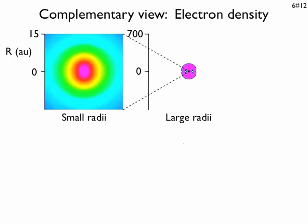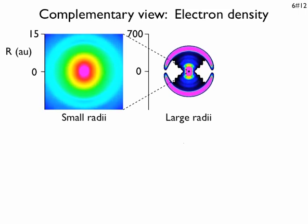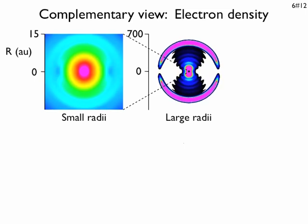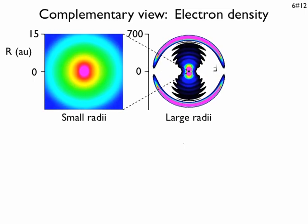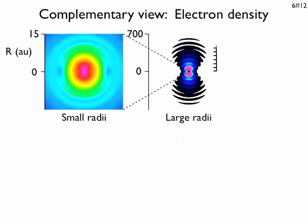At short radii, we clearly see a large breathing motion, which we get because of the two doubly excited states that we mentioned before. At large radii, we see the big bunch of electron density from the direct ionization, followed by a series of wave fronts.